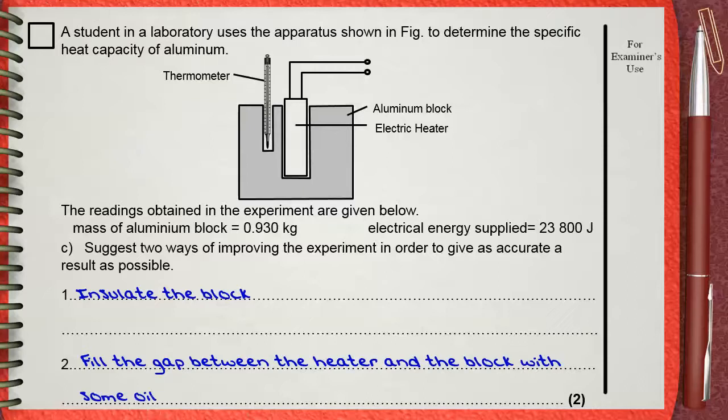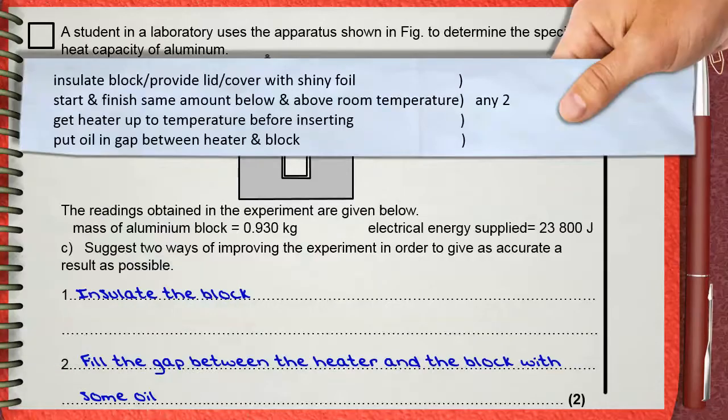The mark scheme gives two marks. One mark for insulate block, provide lid, cover with shiny foil. This is for one mark. Start and finish same amount below and above room temperature. This is the second mark.